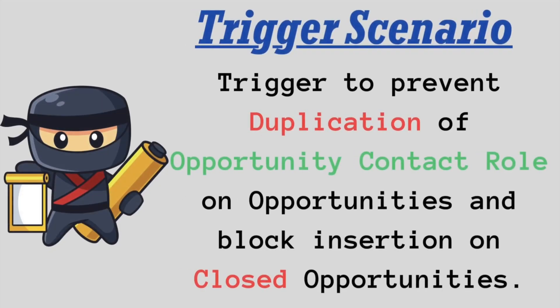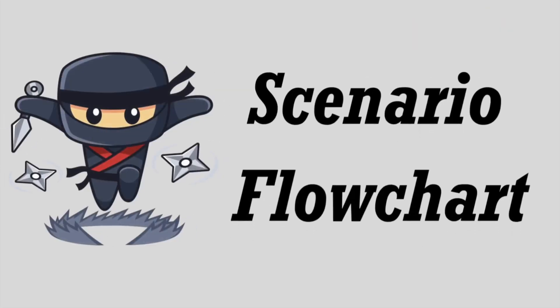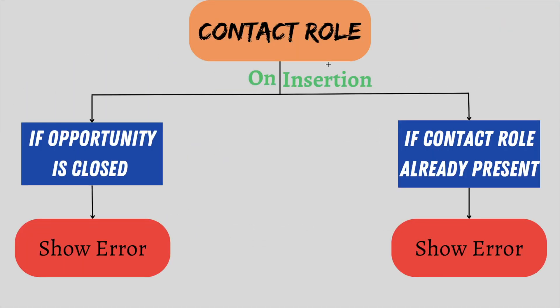Now let's understand the requirement for today. We need to perform two tasks. First, we need to prevent duplication of opportunity contact role. Second, we need to prevent insertion of opportunity contact role on closed opportunities. Let's understand the requirement using a flow diagram. Suppose a user is inserting a contact role on an opportunity. If the opportunity is closed — meaning the stage name is Closed Won or Closed Lost — we need to prevent insertion by showing an error.